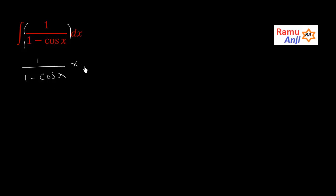Now I am taking only this term: 1/(1 - cos x). Since 1 - cos x is of the form A - B, we have to multiply with A + B. We multiply both the denominator and numerator with A + B, which here is 1 + cos x.